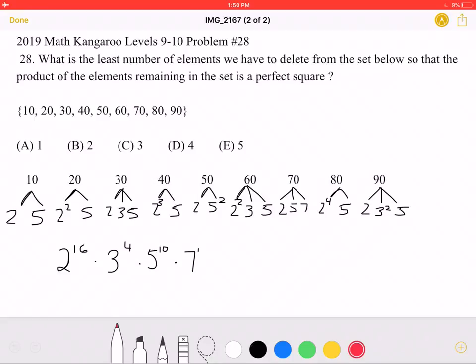I've started by writing the nine numbers here as being a product of their prime factors. This is the product we get after we multiply out all of them.